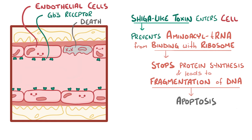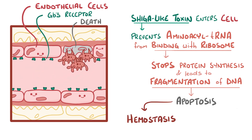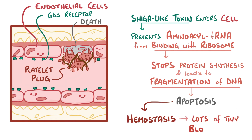Normally, any disruption to the endothelial cell lining of a blood vessel is immediately repaired by primary hemostasis, where a platelet plug forms to prevent more bleeding. So when large numbers of kidney endothelial cells start undergoing apoptosis, lots of tiny blood clots start to form in the kidneys.